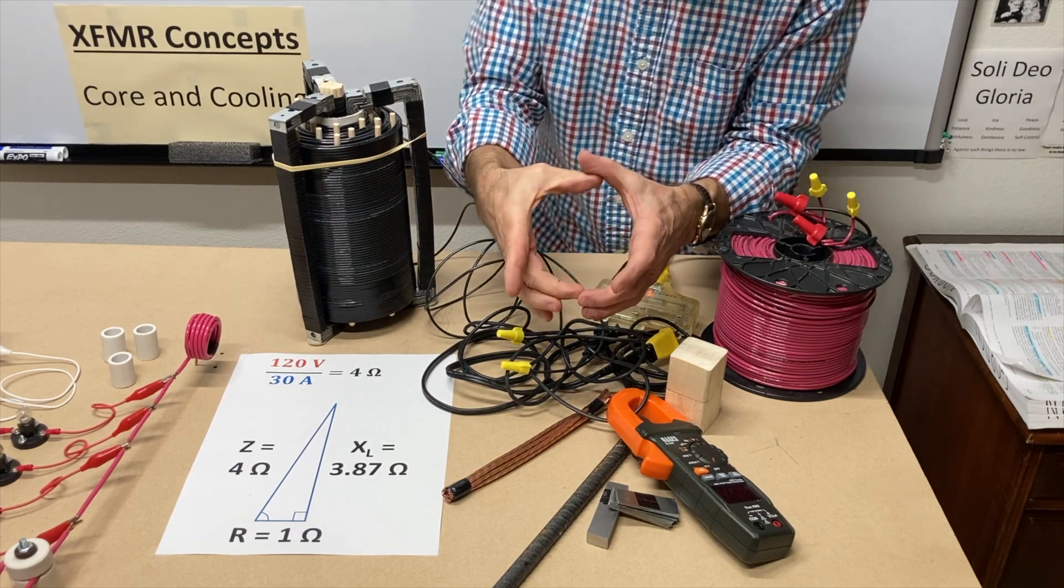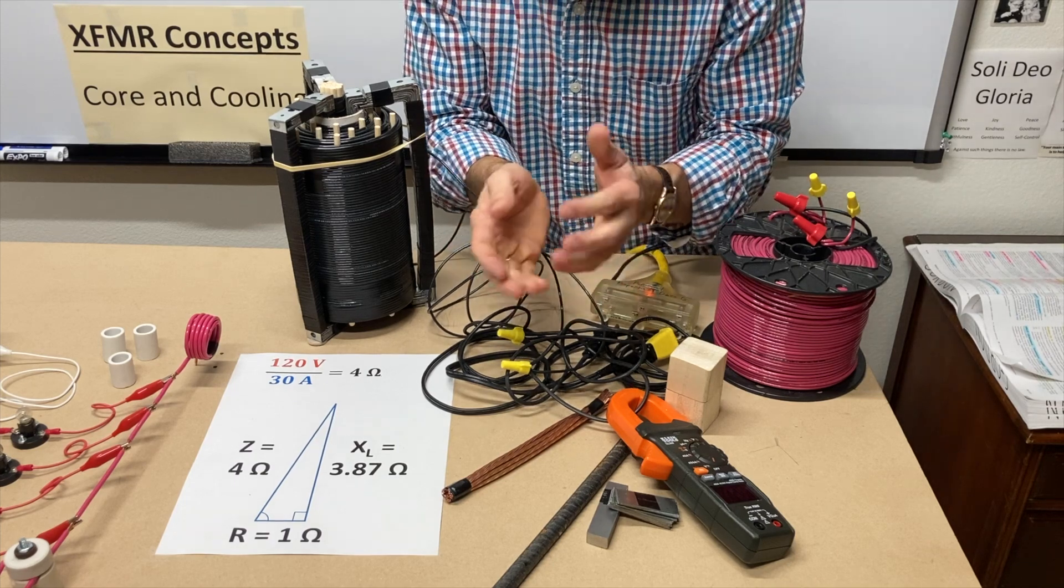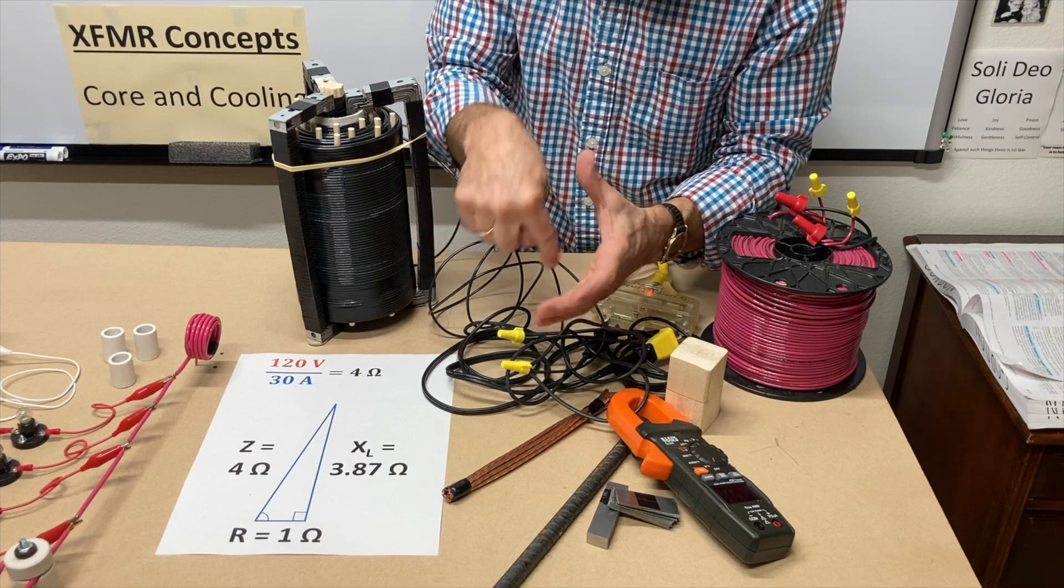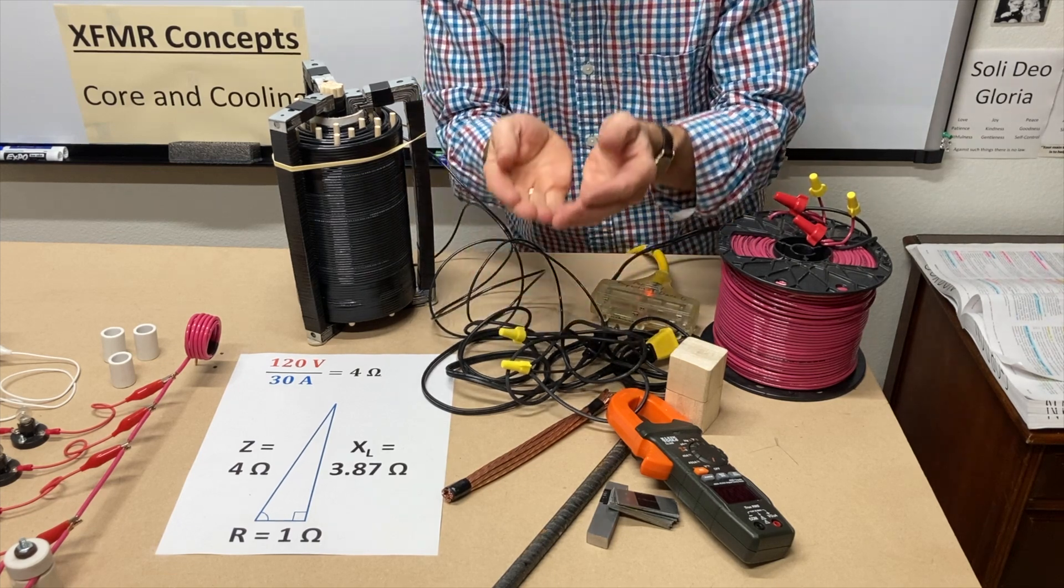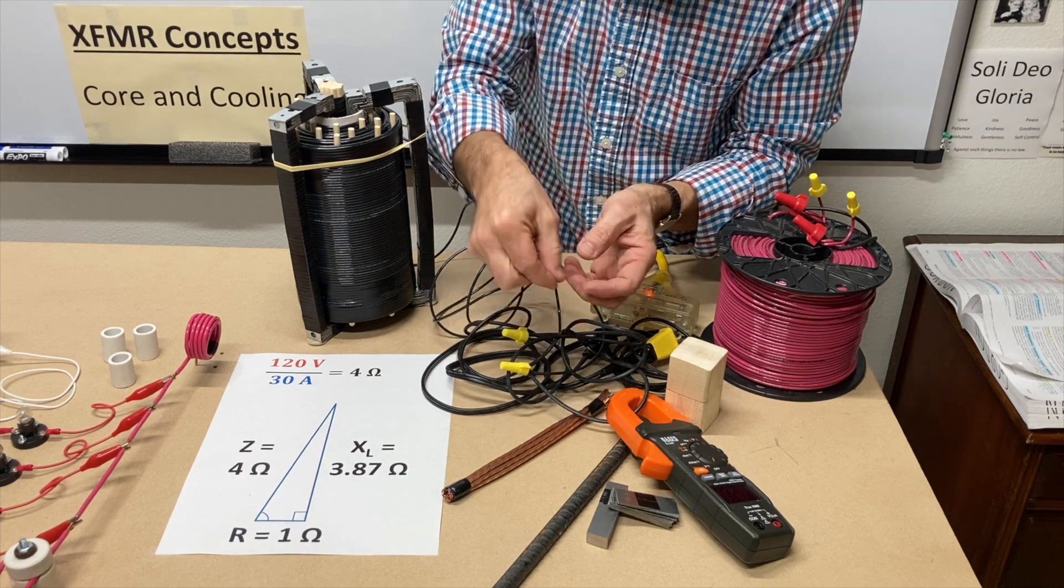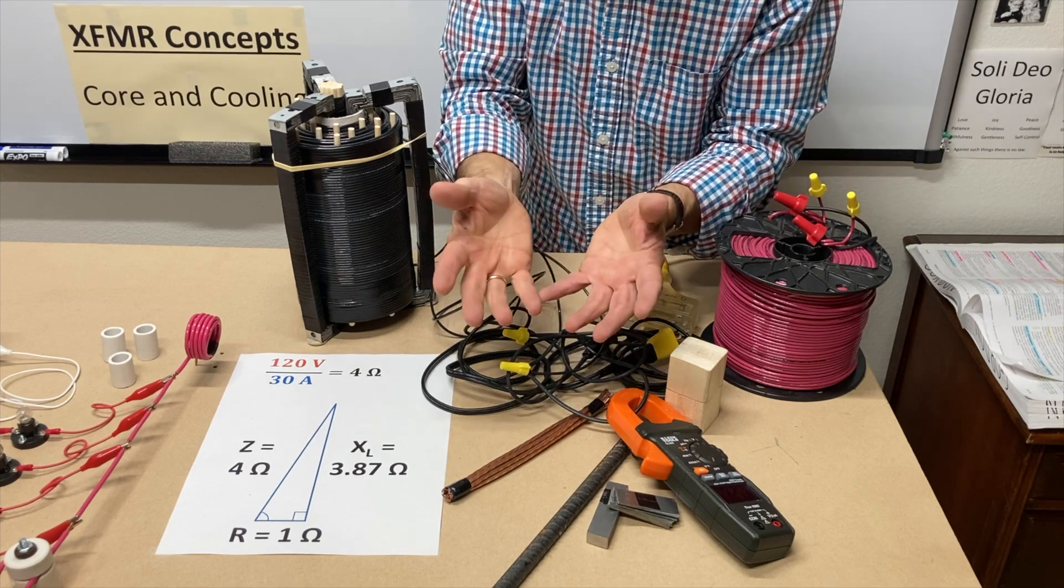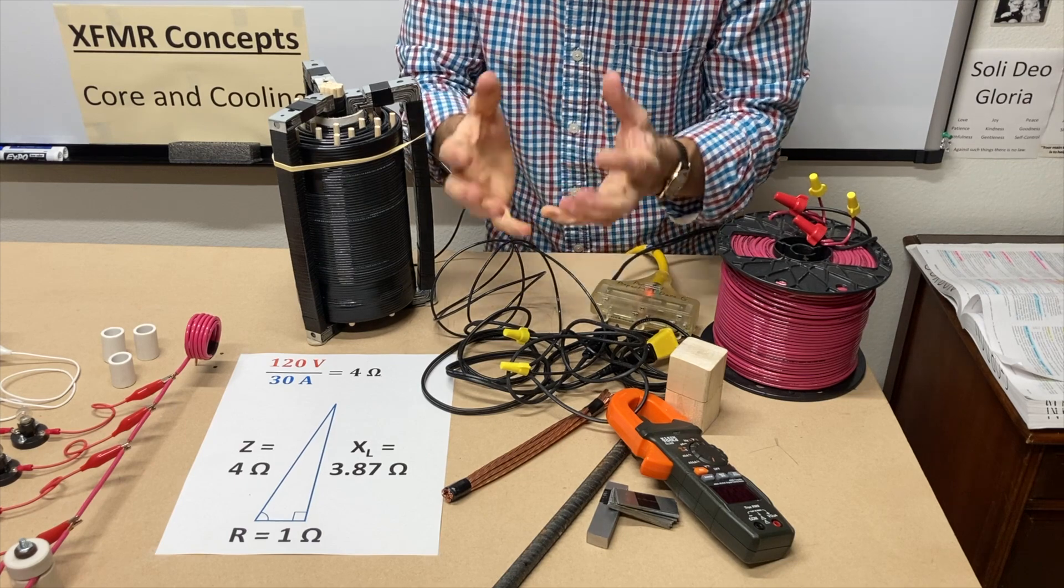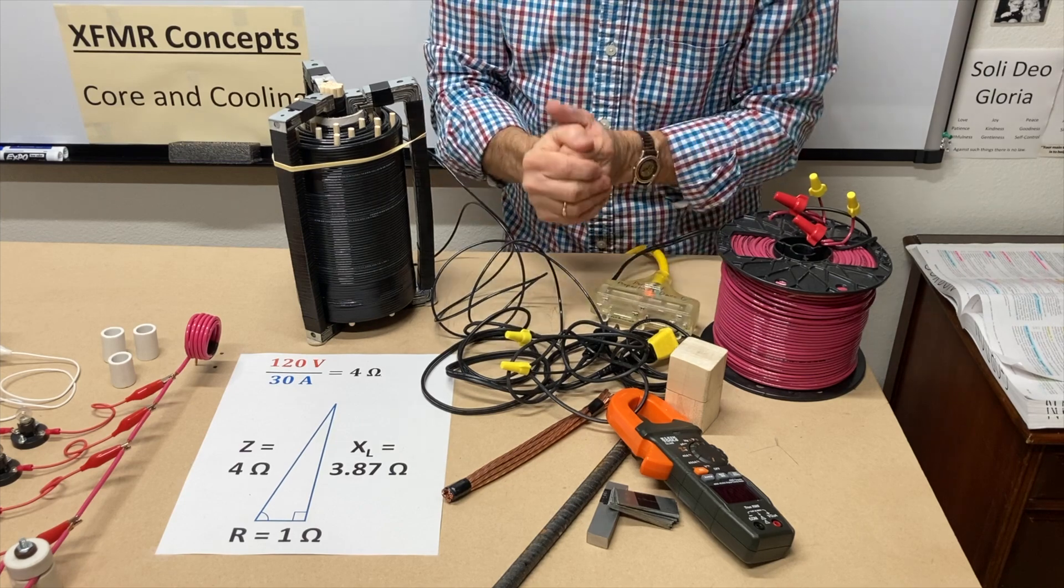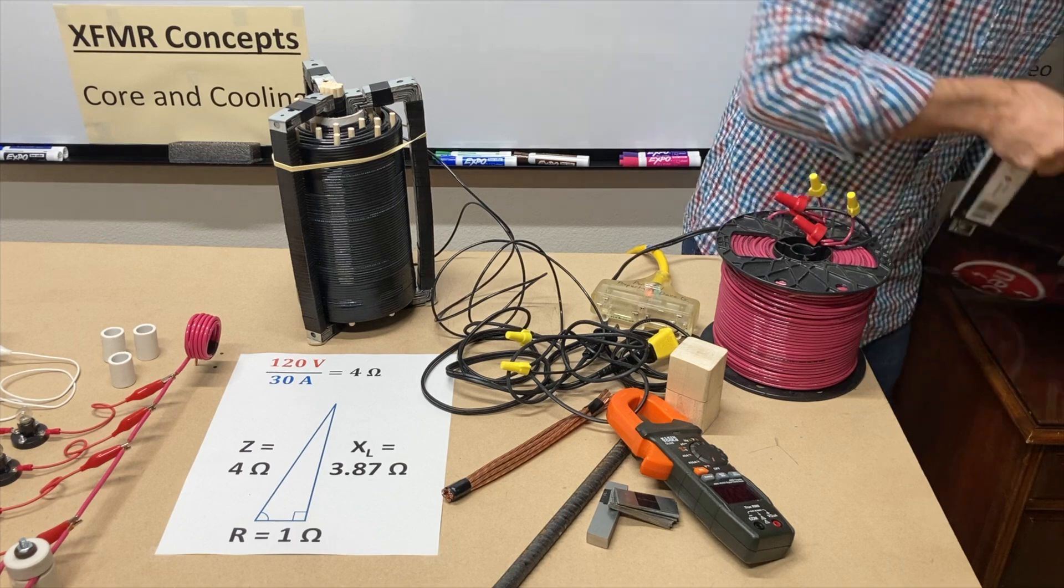But you say, well, what about the transformers? I've seen them where the wire is just wrapped tight around the core. Well, there the engineers have calculated out how much current they expect to be flowing in that wire. What the temperature rise, right? How much hotter will it get? And can the wire, its insulation and the core handle that temperature? Sure. That's what they calculate out. So if you use it beyond its rating, then you're going to start overheating any transformer.